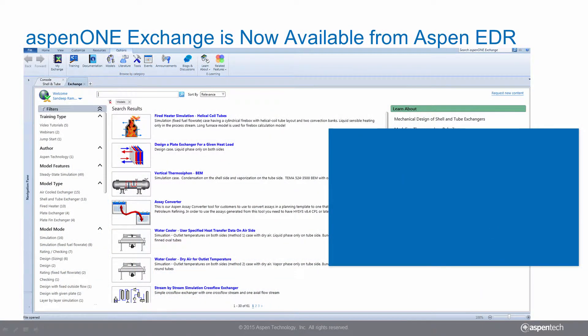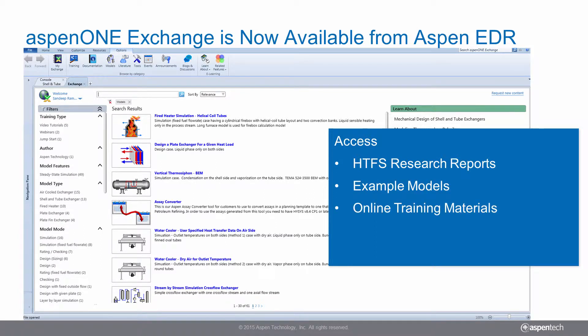Aspen One Exchange is a one-stop shop where users can access HTFS research documents, EDR example models, and online training materials, including the support knowledge base and help. You can also learn from Aspen Tech's latest product announcements.